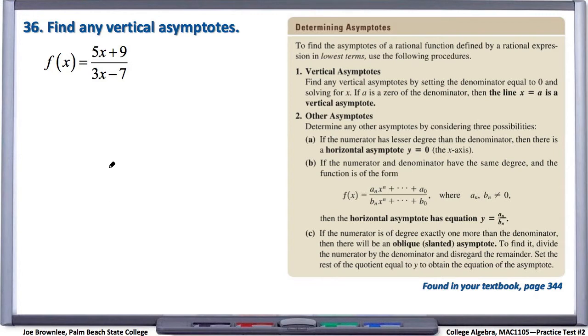And again, just like we did with number 35, we're going to find the vertical asymptote simply by setting the denominator equal to 0 and solving.